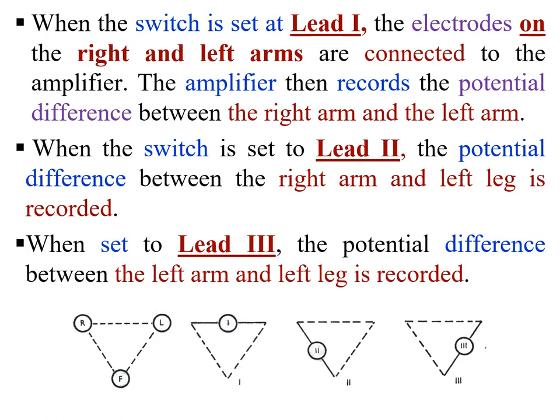When the switch is set at Lead 1, the electrodes on the right and left arms are connected to the amplifier, which then records the potential difference between the right arm and the left arm. When the switch is set to Lead 2, the potential difference between the right arm and left leg is recorded. When set to Lead 3, the potential difference between the left arm and the left leg is recorded, as shown below.